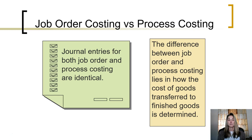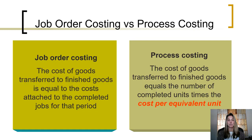The difference between a job order and a process costing system lies in how the cost of goods are transferred to finished goods and how that cost is determined. In a job order cost system, the cost of goods transferred from goods in process to finished goods, when inventory is completed, is equal to the cost attached to the completed jobs for that period, which works well when we're able to differentiate one job or one inventory item from another.